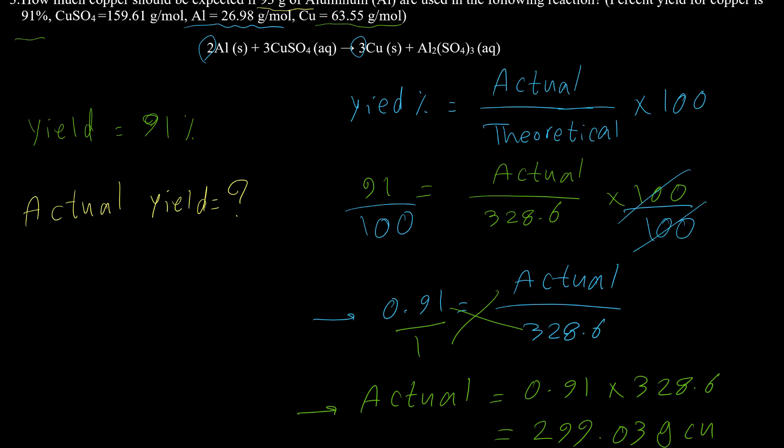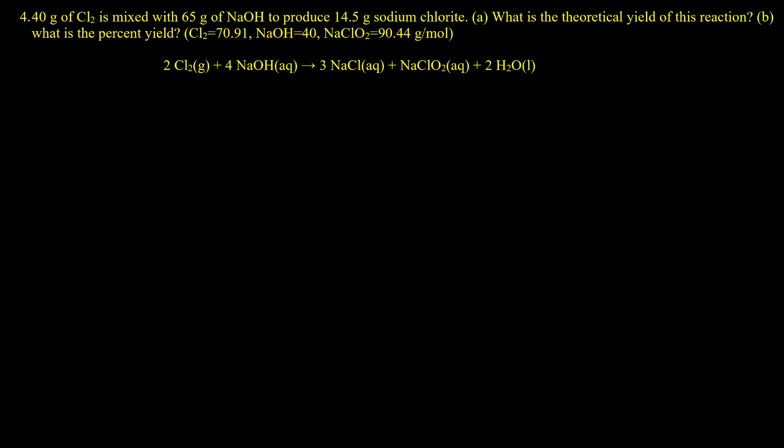This is the actual value we should expect at the end of the reaction. For the last example, question four, it says 40 grams of Cl₂ is mixed with 65 grams of sodium hydroxide to produce 14.5 grams of sodium chloride. What is the theoretical yield and what is the percent yield?